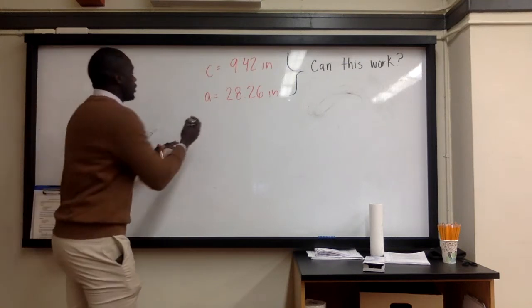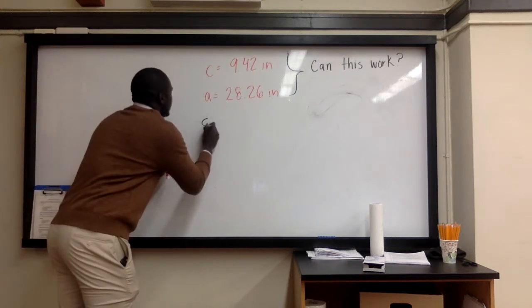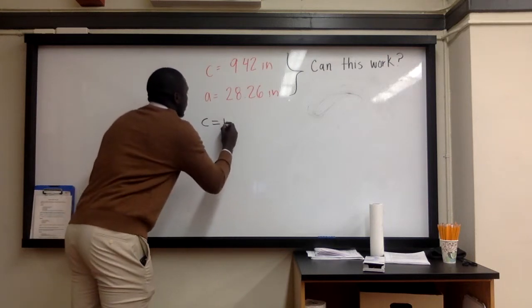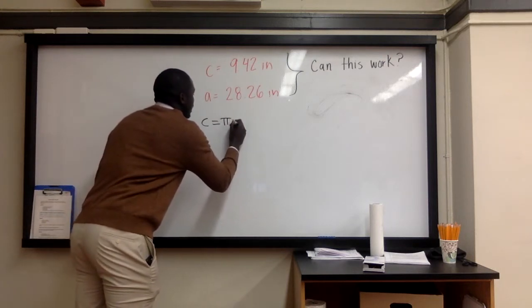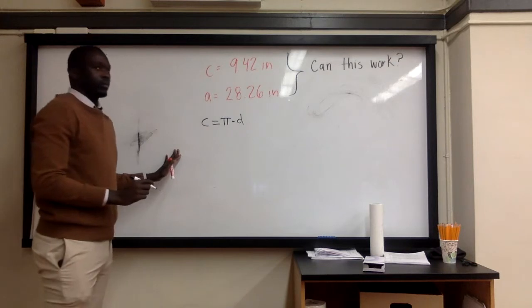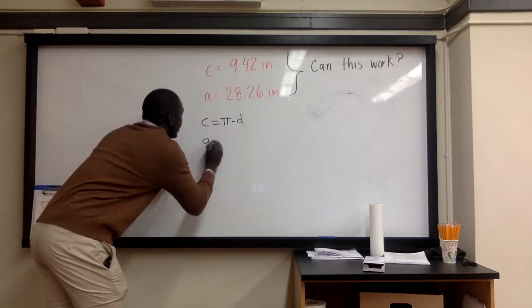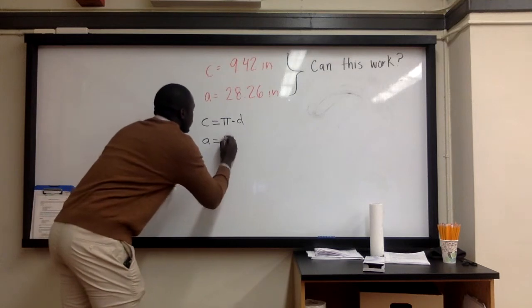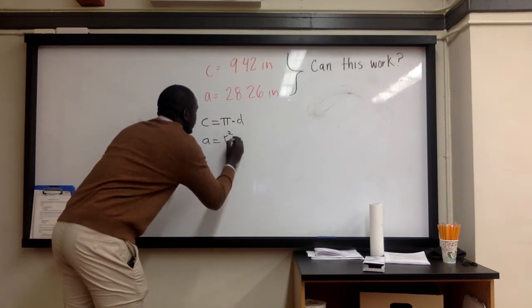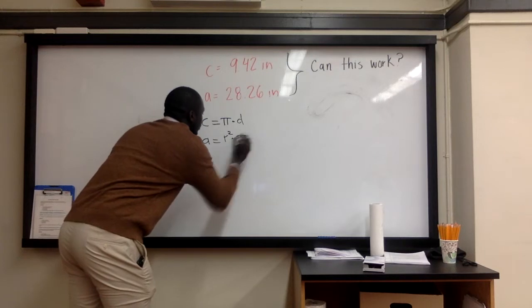Now you find the circumference by doing C is equal to π times D. And you find the area of the circle by going A is equal to π times R squared.